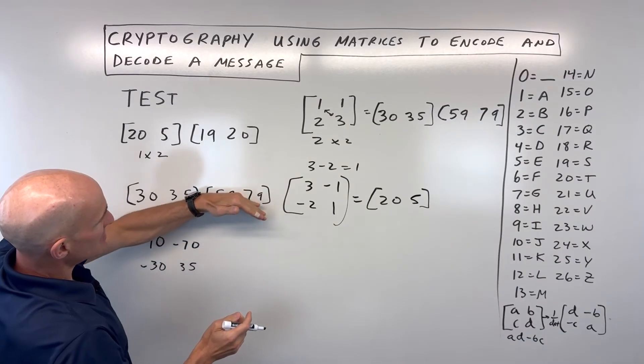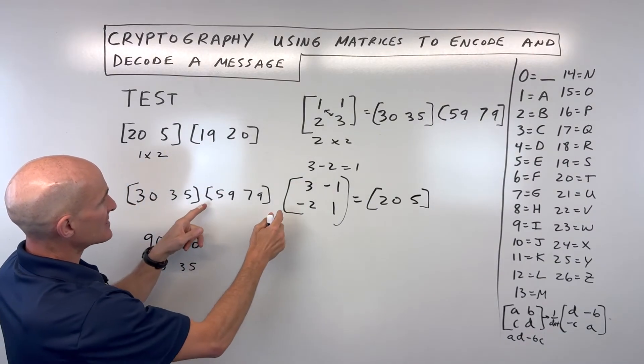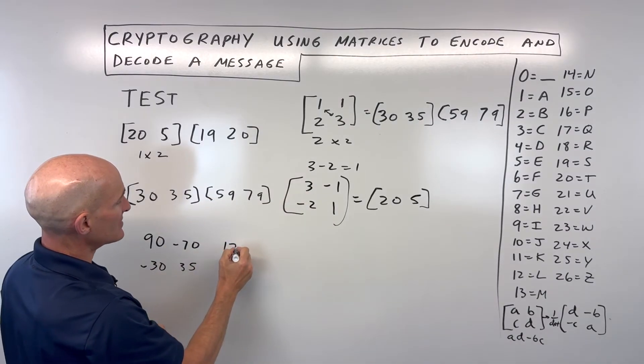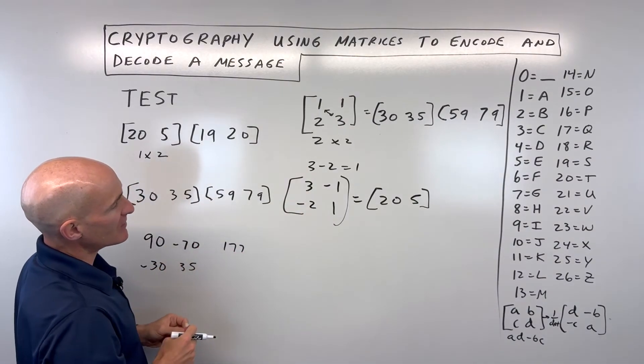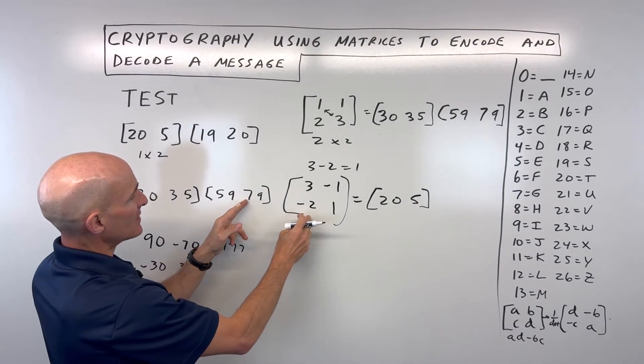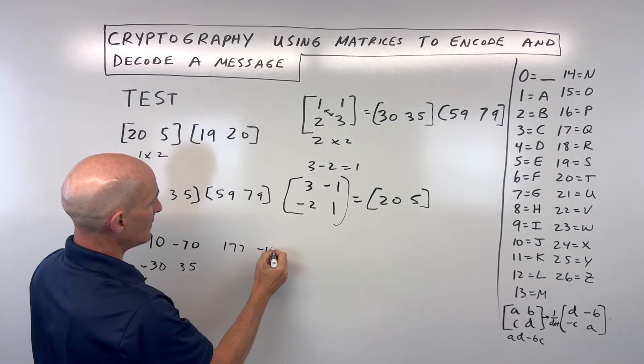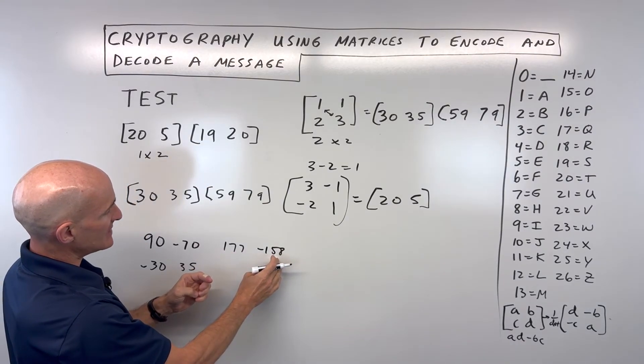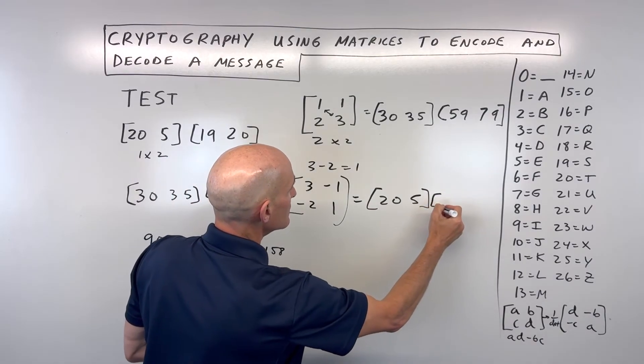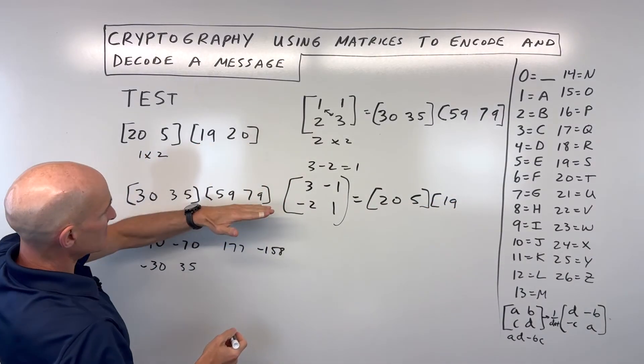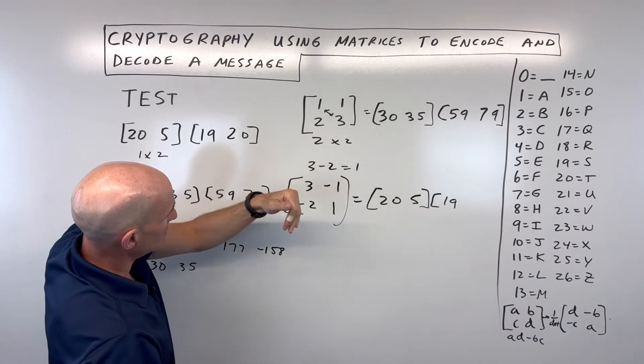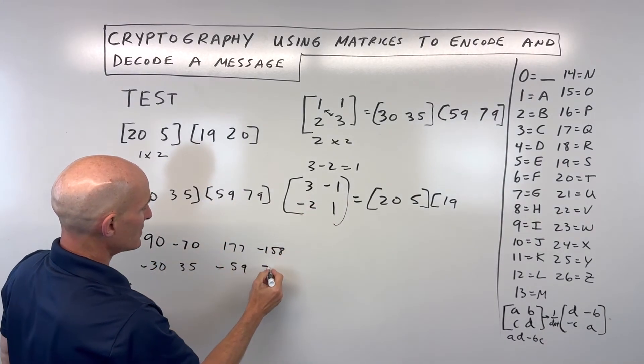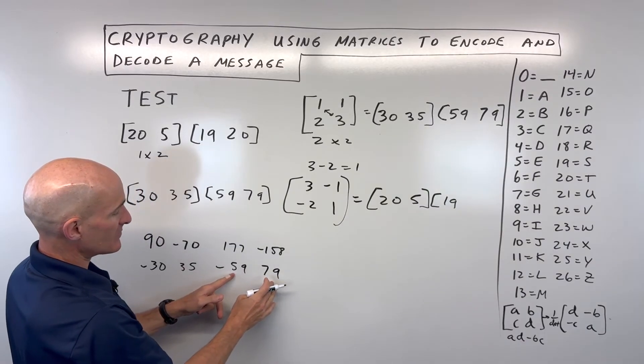And if we take the second matrix, 59 times 3, that's 177 plus negative 2 times 79, which is negative 158. And if we add those together, that comes out to 19. And then if we take this times the second column, we've got 59 times negative 1 is negative 59, 79 times 1 is 79. That adds up to 20.